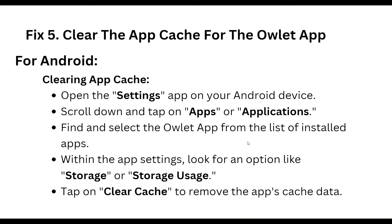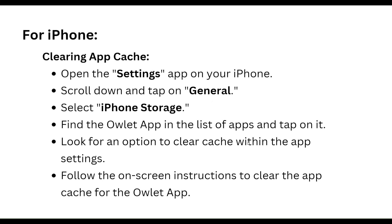The fifth step is to clear the app cache. For Android, open the Settings app, scroll down and tap Apps or Applications, find and select the Owlet app from the list of installed apps, then look for the Storage or Storage Usage option and tap Clear Cache.